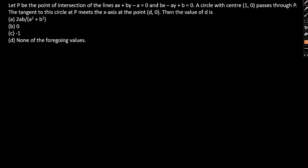So having said all of that, let's focus on the question at hand. Let P be the point of intersection of the line AX plus BY minus A equal to 0 and BX minus AY plus B equal to 0. A circle with center (1,0) passes through P. The tangent to the circle at P meets the x-axis at point (D,0), then the value of D is what we need to find.